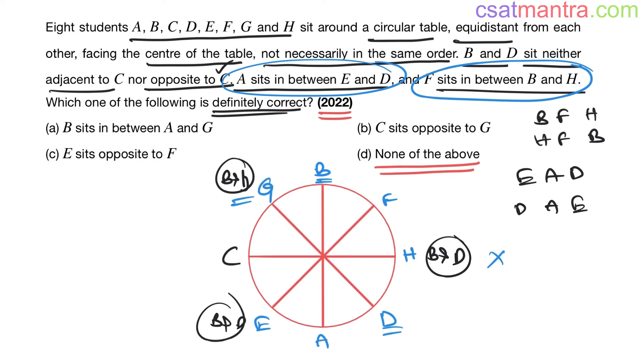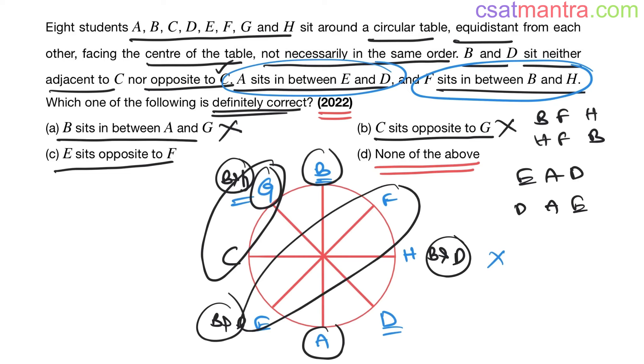Now let's check the options. B sits between A and G - A is here, G is here, whereas B is here. Incorrect. C sits opposite to G, but C is adjacent to G. Incorrect. E sits opposite to F - we are not able to disprove this. This is correct for this possibility.